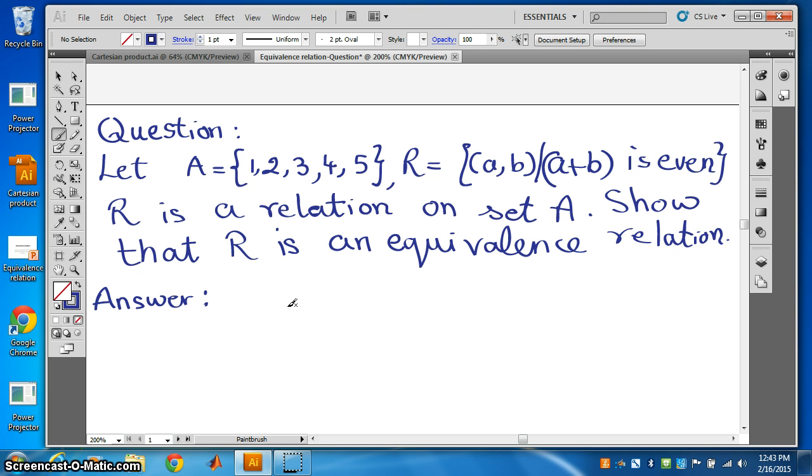Then after selecting R from A cross A, we have to show R is an equivalence relation. What is an equivalence relation? R is said to be an equivalence relation if it is reflexive, symmetric, and transitive.